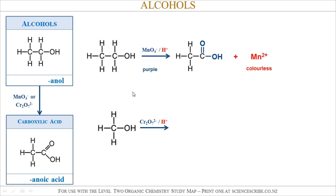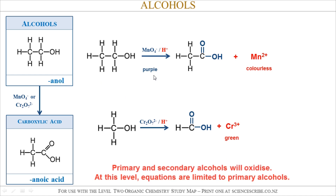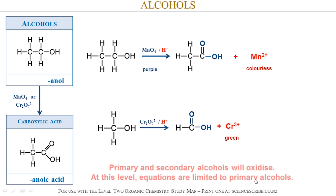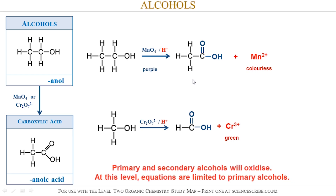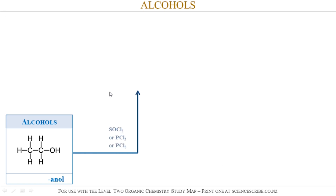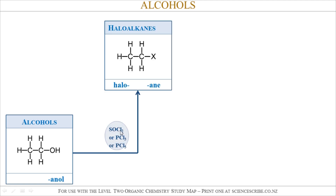Another example: using Cr2O7²⁻ (dichromate) — let's say with methanol as the starting alcohol. I copy it across and tack on the carboxylic acid functional group. Dichromate Cr2O7²⁻ makes Cr³⁺, which is green, so it changes from orange to green in this reaction. For level 2 chemistry, all you need to know is that only primary and secondary alcohols will oxidize — tertiary ones do not oxidize.